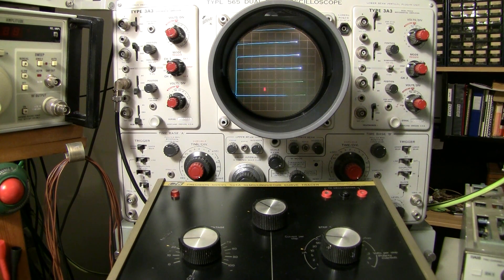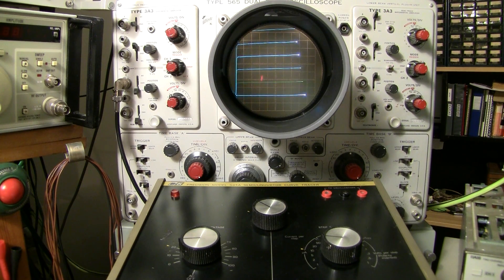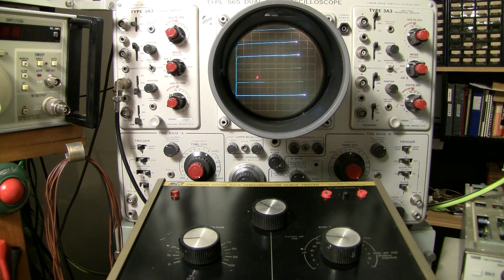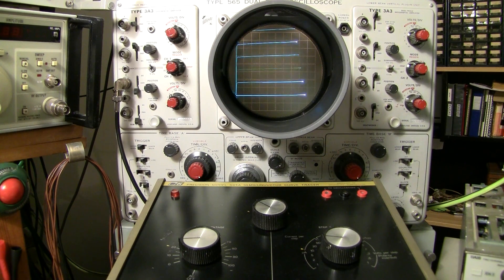On this axis here which is the vertical axis we've got the current for the collector. Each box on the screen starting from the baseline is 1 milliamp. So you've got 1 milliamp, 2 milliamps, 3 milliamps, 4 milliamps and so on up the screen.